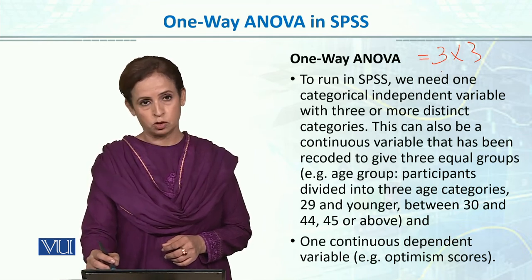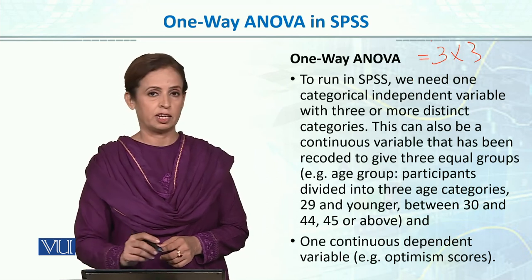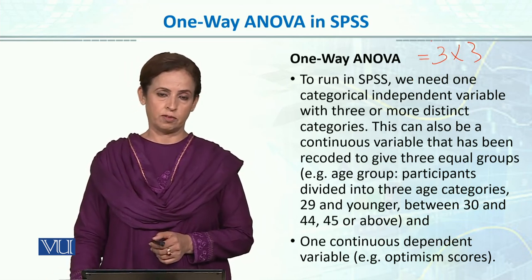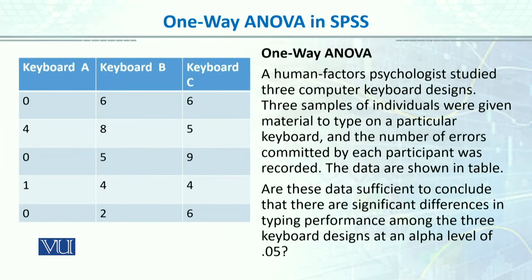We will stick to one-way ANOVA, where only one independent variable has three levels. In this example, human factors psychologists studied three computer keyboard designs. Samples of individuals were given material to type on a particular keyboard and the number of errors committed by each participant was recorded. The data is shown in the table. Are these data sufficient to conclude that there are significant differences in typing performance among the three keyboard designs at an alpha level of 0.05?